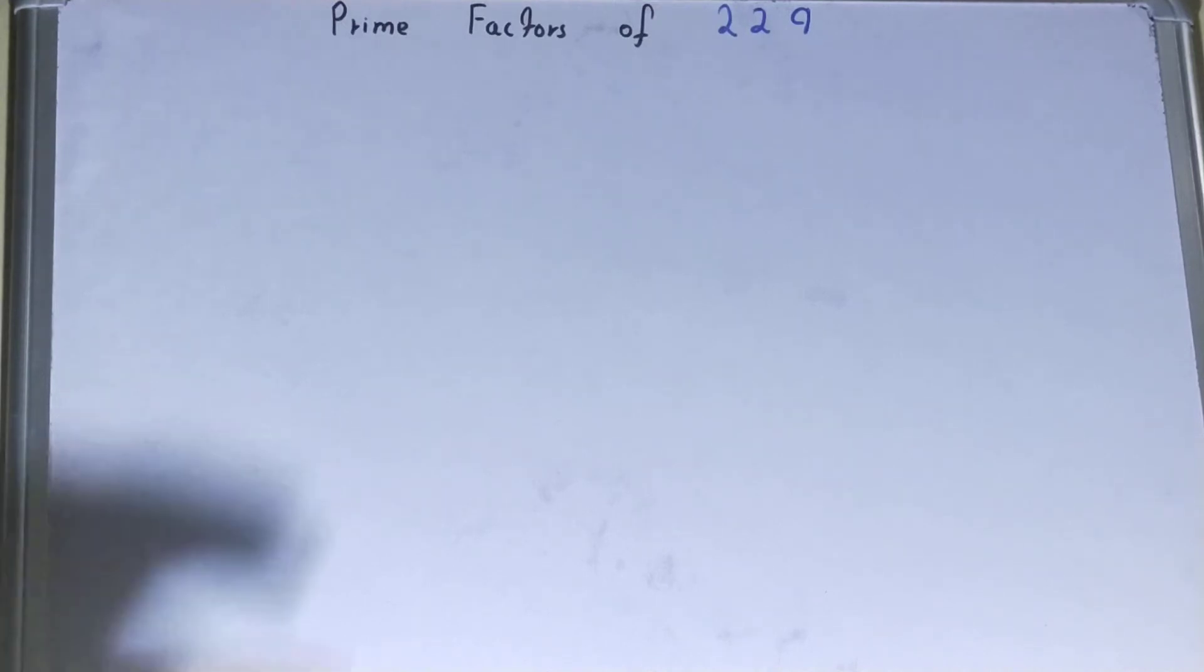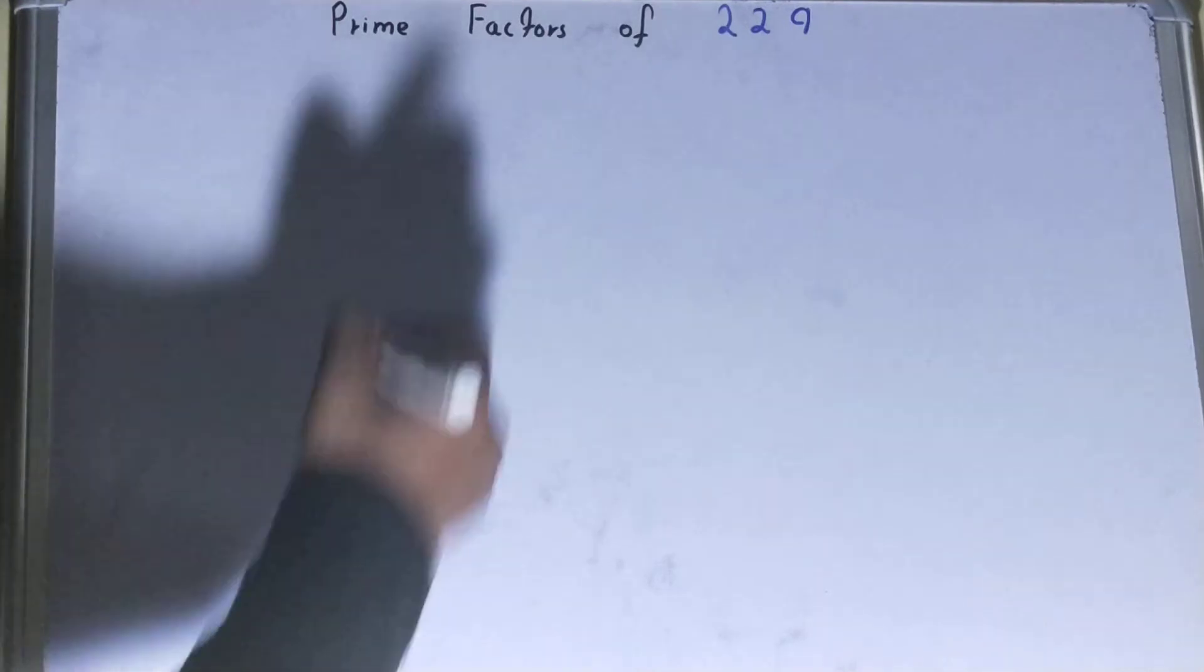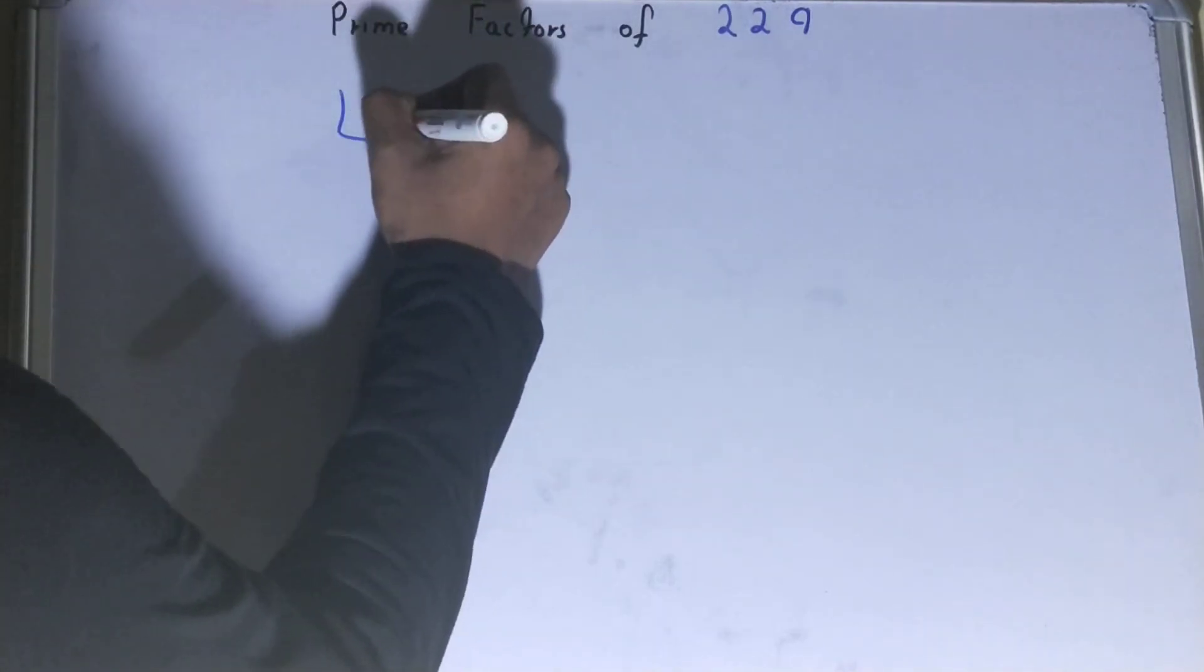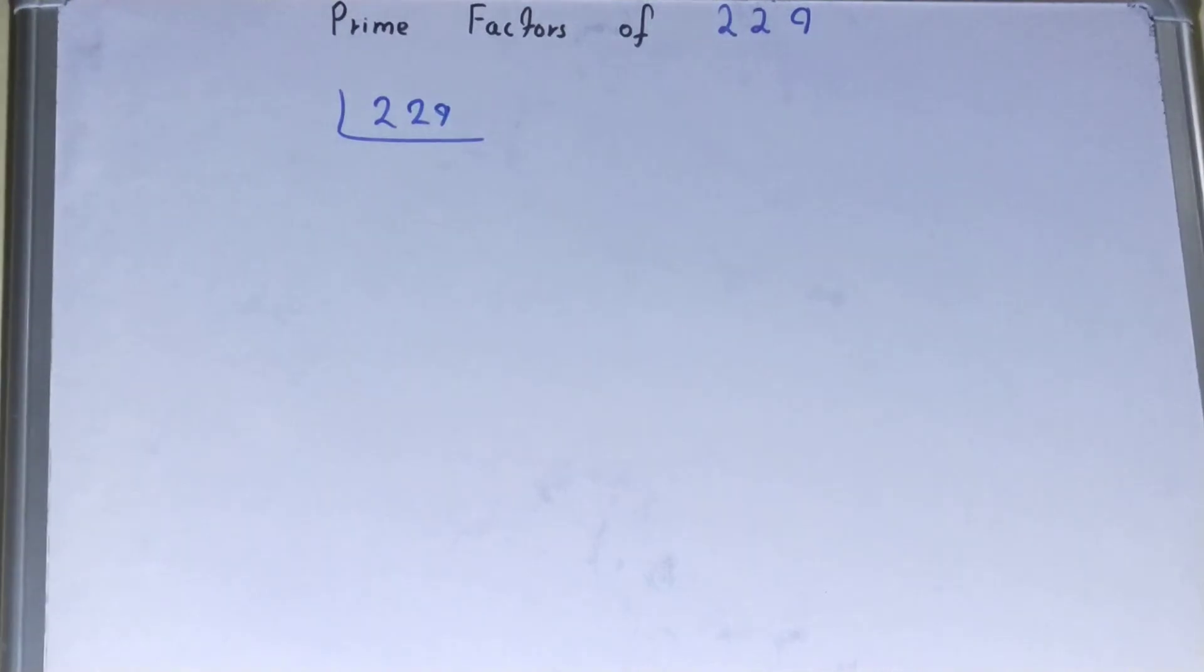that the prime factors of 229 is the number itself, right? But still, if you want to show it in an exam, then you can write it like this. And because 229 is a prime number, it is only